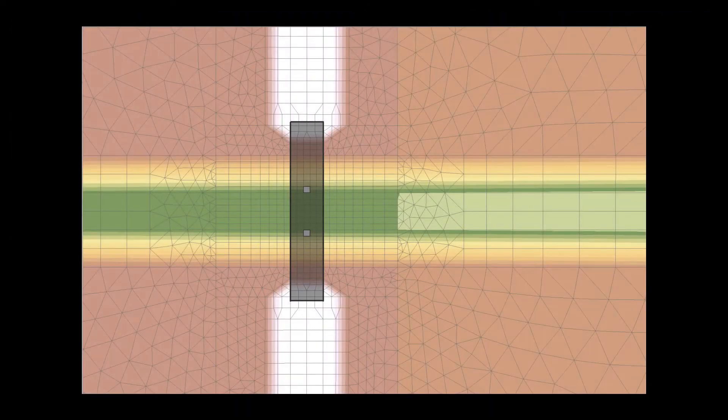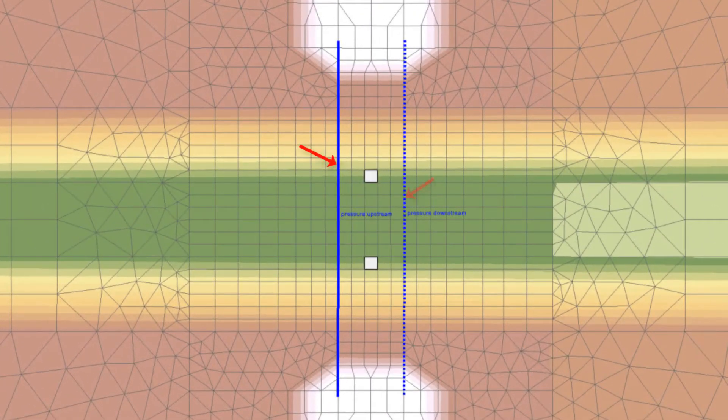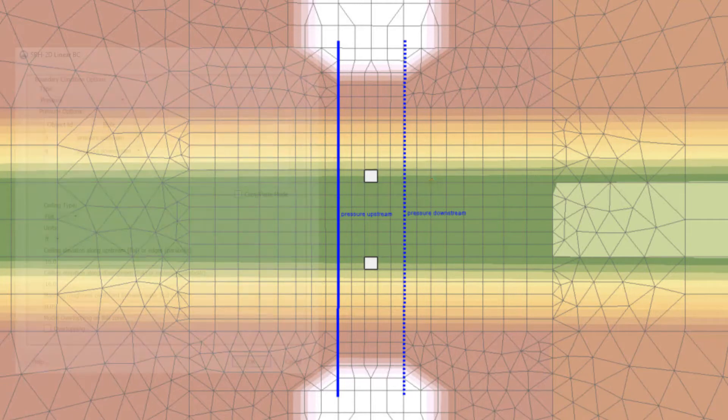The first method is to represent the bridge deck with boundary condition lines at the upstream and downstream face of the bridge. The mesh must be created so that elements align with the bridge deck structure. The low chord and high chord of the bridge structure can be entered in the bridge deck boundary condition window.